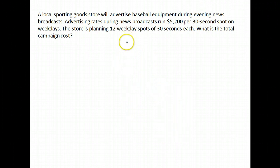A local sporting goods store will advertise baseball equipment during the evening news. Advertising rates during the news broadcasts are $5,200 for a 30-second spot on the weekdays. The store is planning 12 weekday spots of 30 seconds each. What is the campaign cost?